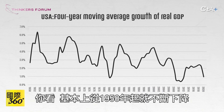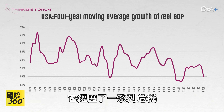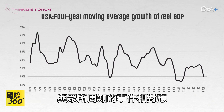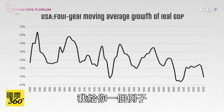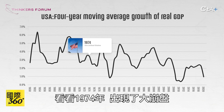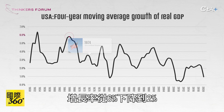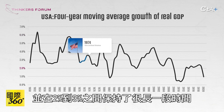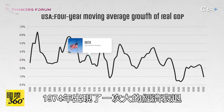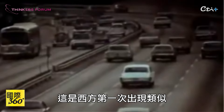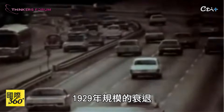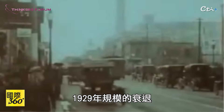You'll see it's declined continuously, basically since 1950. It has a series of crises which correspond to well-known events. For example, in 1974 there was a big crash — growth went down from 6% to 2% and stayed between 2% and 3% for a long time. There was a big economic slump in 1974, very famous at the time. It was the first occasion on which there had been a slump of something like the scale of 1929 in the West.